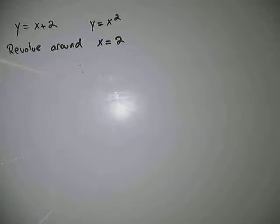Okay, so in this problem we've got the function y equals x plus 2 and y equals x squared, and we want to revolve the enclosed region of those two functions around x equals 2.